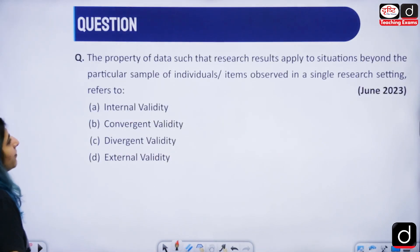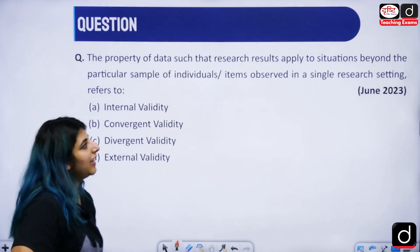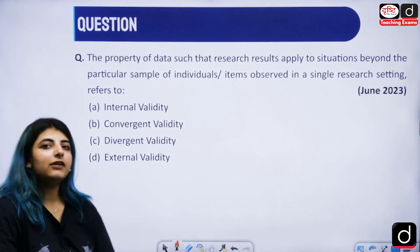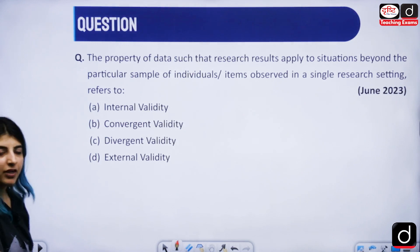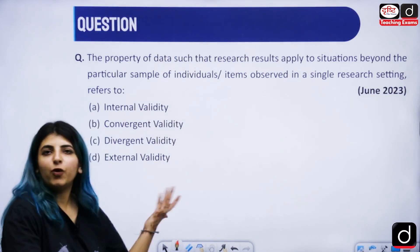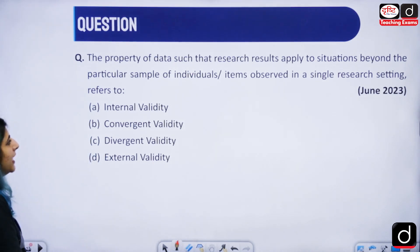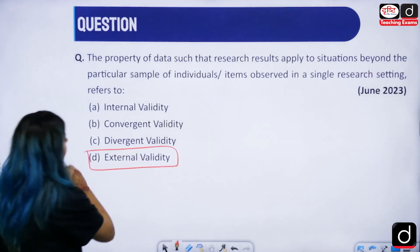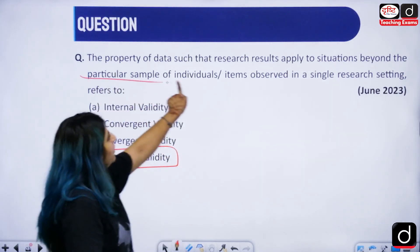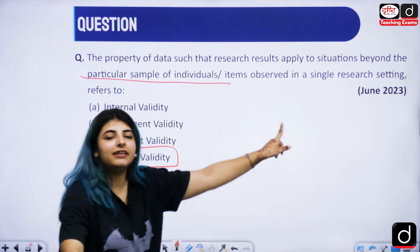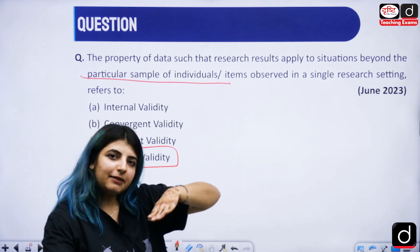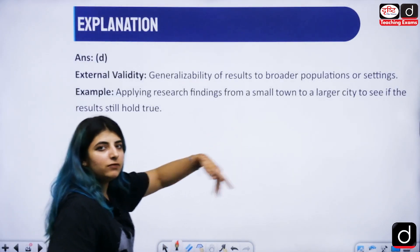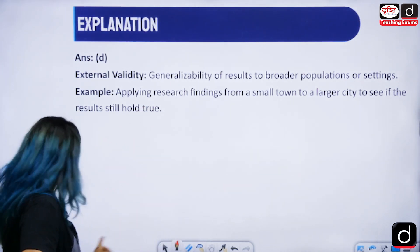The next question now is the property of data such that the research results applied to situations beyond the particular sample of individuals or items observed in a single research setting refers to what? We have done the types of validity and the answer is amongst them only. The answer to this question is option D that is external validity. If you try to read the question again: situations beyond particular sample observed in a single research setting. So if from single research setting you're going beyond, going externally, then it is external validity. So again the same example from a small town to a larger city, larger group of people, generalizability.